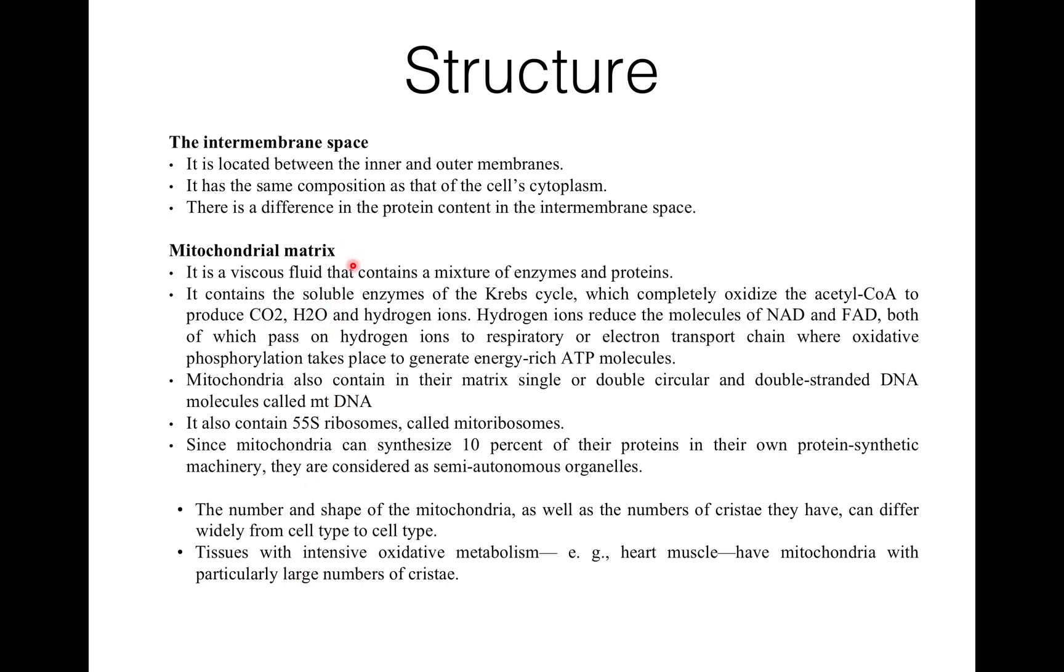Now mitochondrial matrix. It is a viscous fluid that contains a mixture of enzymes and proteins. It contains soluble enzymes of the Krebs cycle which helps in oxidizing the acetyl coenzyme A to produce carbon dioxide, water, and hydrogen ions. The produced hydrogen ion reduces the molecules of NAD and FAD, and both of which pass on hydrogen ions to respiratory or ETC, that is electron transport chain, where oxidative phosphorylation takes place and which helps in generating energy-rich ATP molecules.